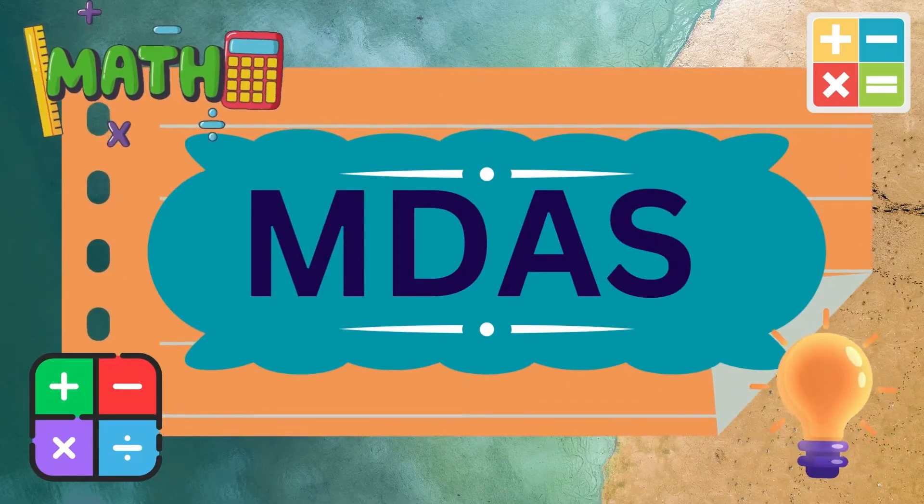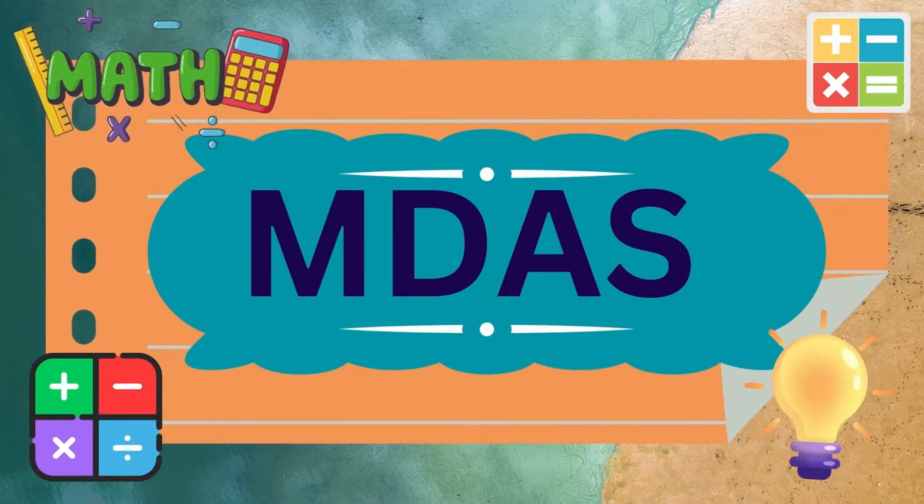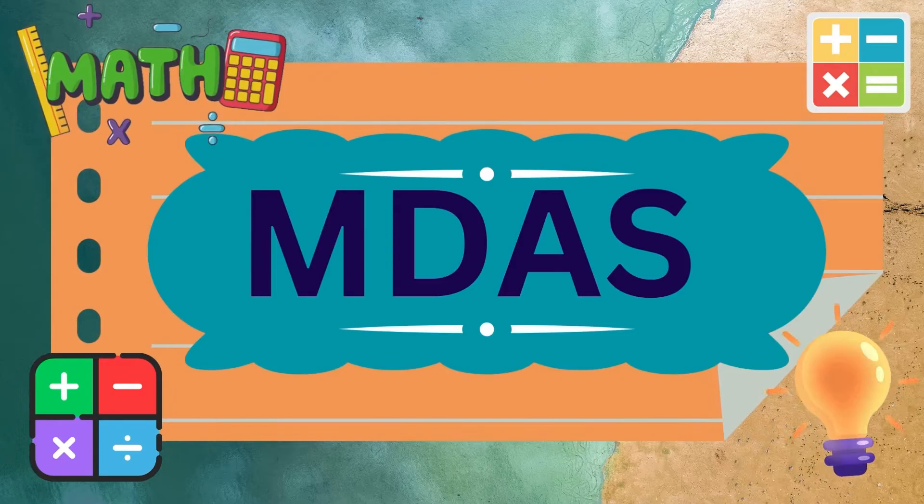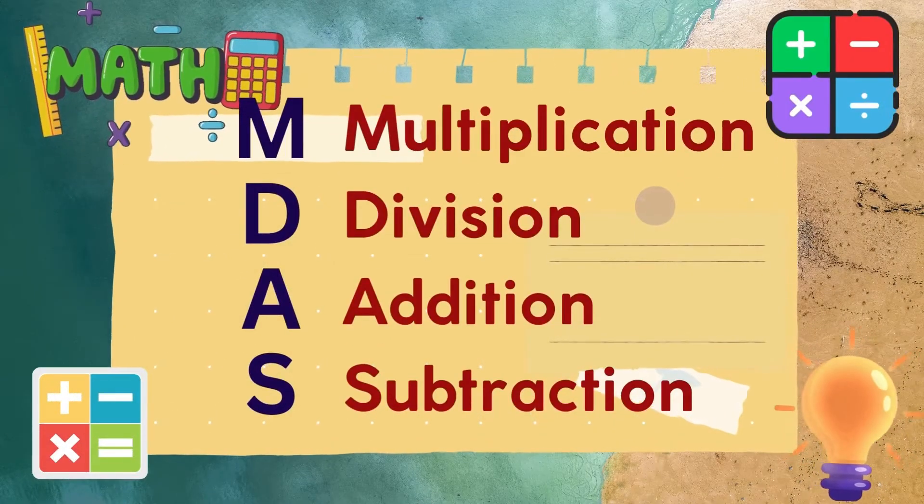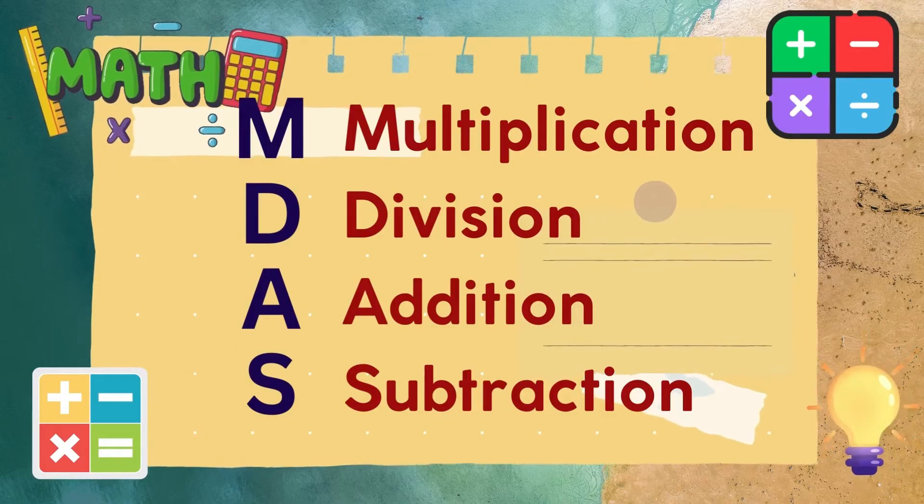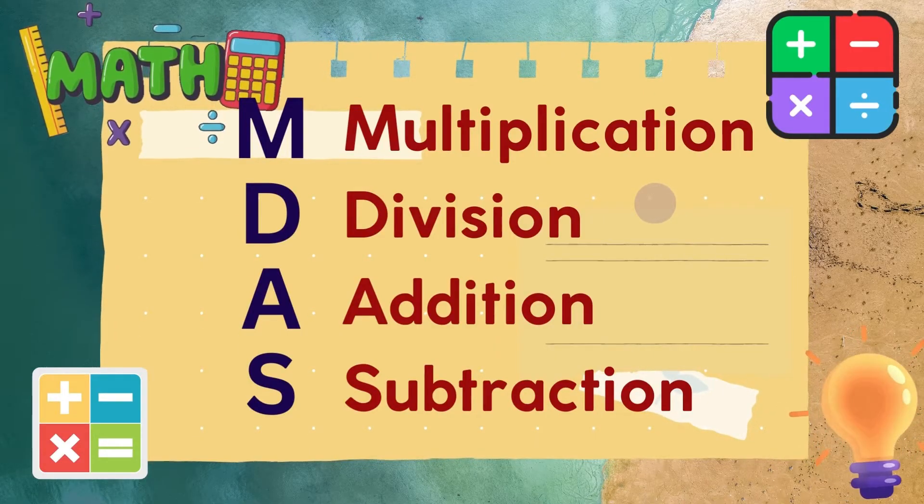This is the order of operations we need to follow. We need to perform the operations from left to right. Take note that we need to multiply first, then divide, before we perform the addition and subtraction.